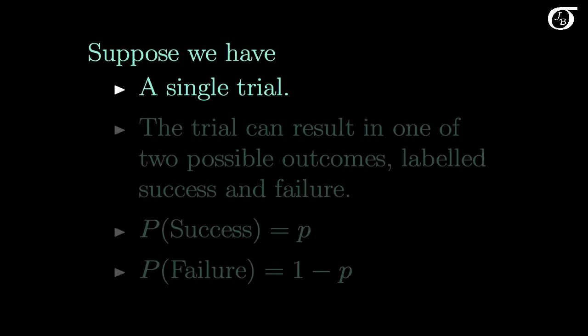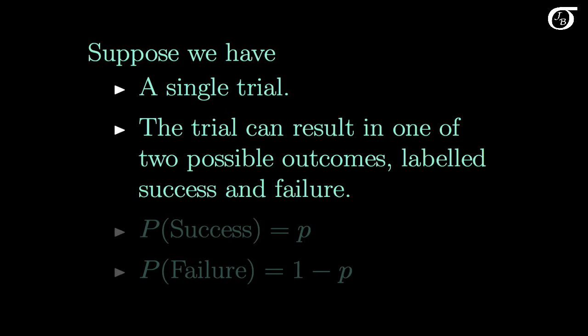Suppose we have a single trial where each trial can result in one of two possible mutually exclusive outcomes, and we're going to label those two outcomes success and failure. The probability of success on that trial is going to be represented by little p, and the probability of failure must be 1-p.